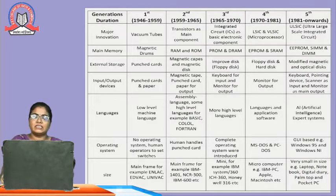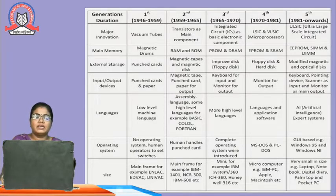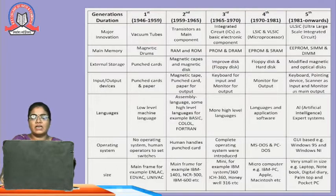In the second generation, transistors were used as the main component. RAM and ROM were introduced. Magnetic tapes and magnetic disks were used as external storage. Magnetic tape, punched cards, and paper were used for output. Assembly language and some high-level languages — for example, BASIC, COBOL, and FORTRAN — were used. Human-handled punched cards were used. Examples of mainframe computers include IBM 1401, NCR 300, and IBM 600.